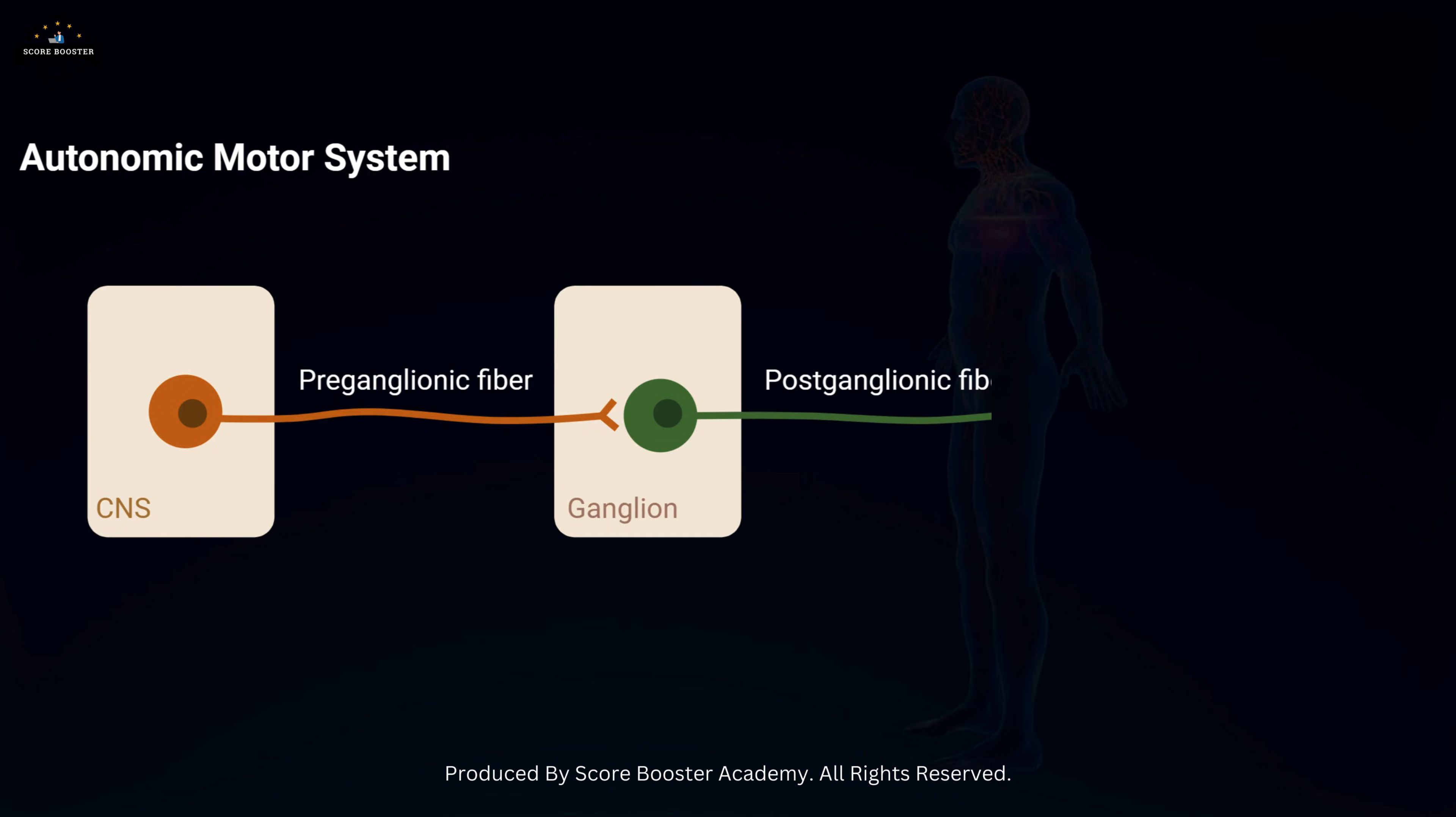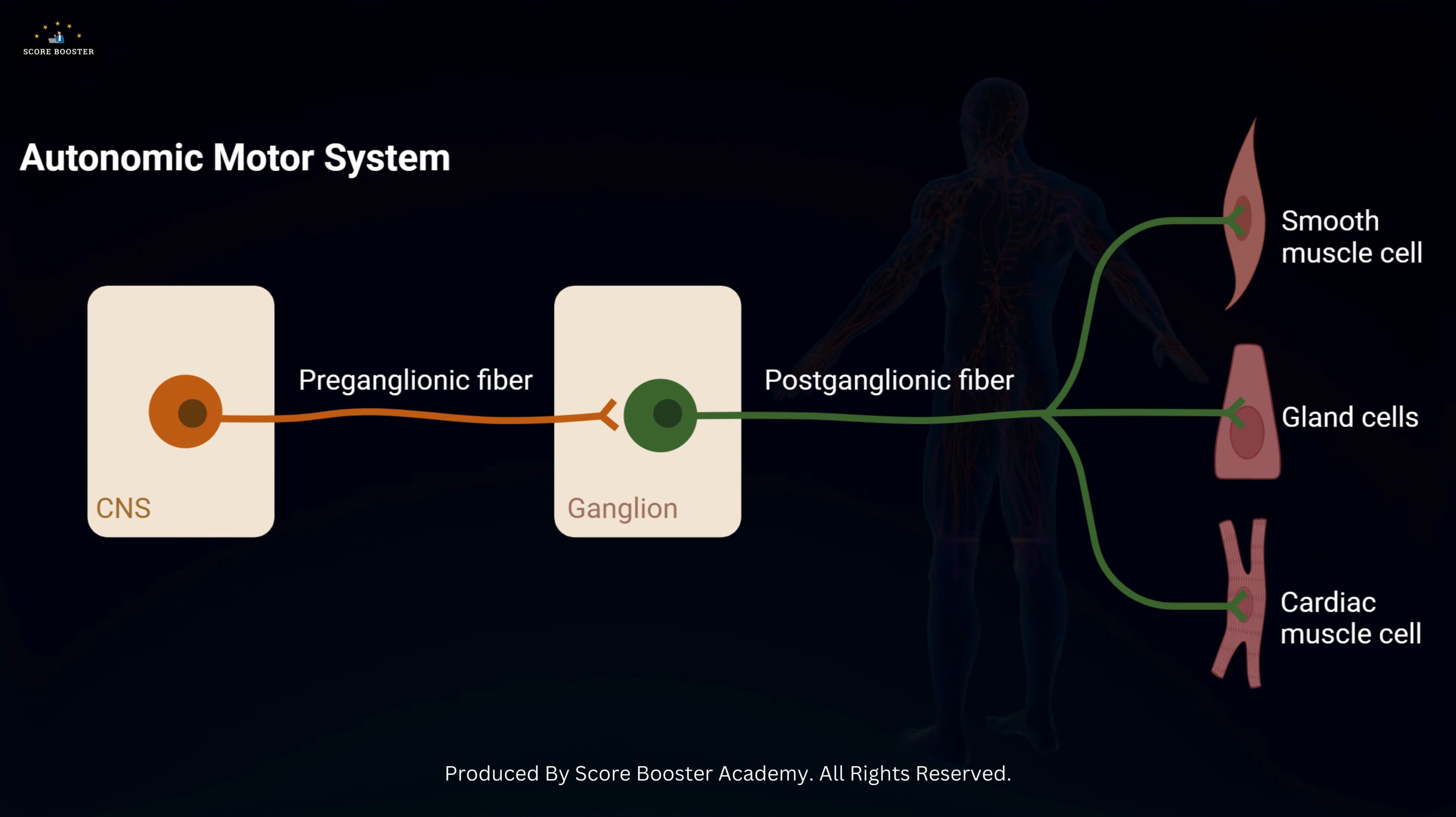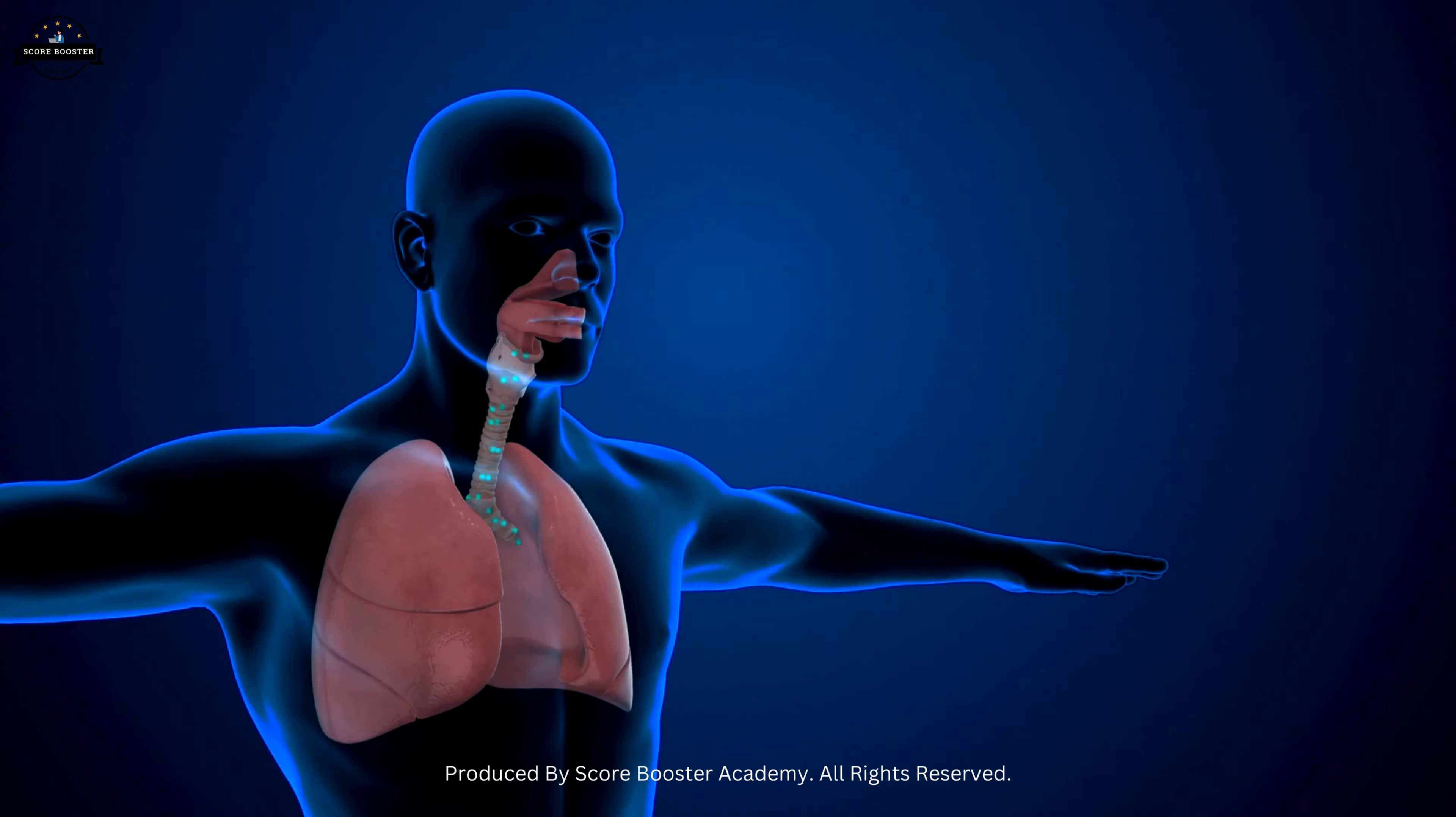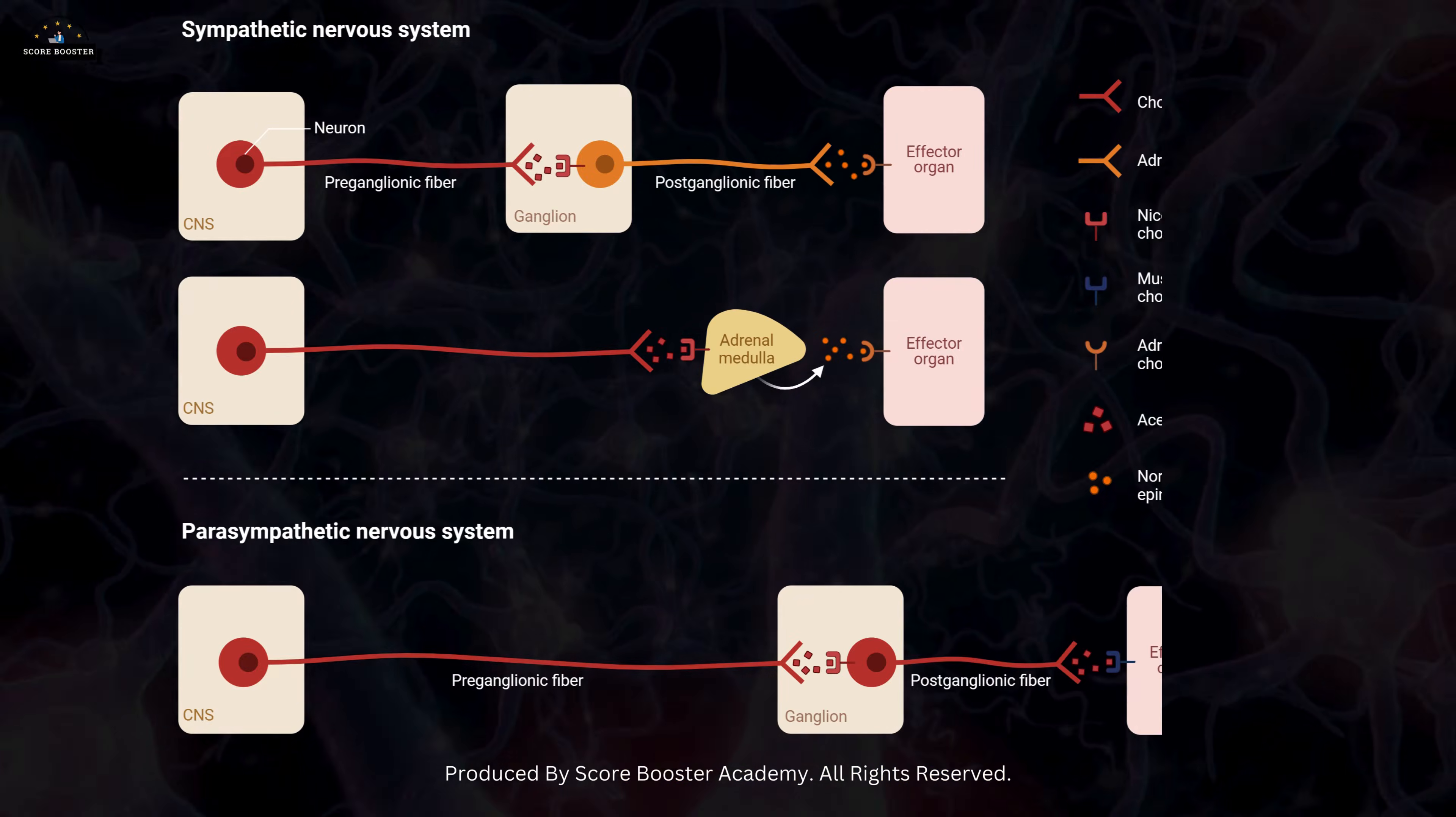The autonomic nervous system, on the other hand, regulates involuntary functions like heartbeat, digestion, and breathing. It's further divided into the sympathetic and parasympathetic systems.